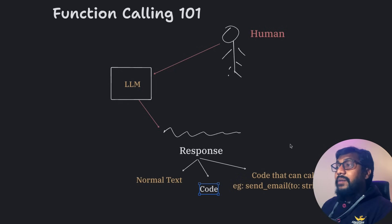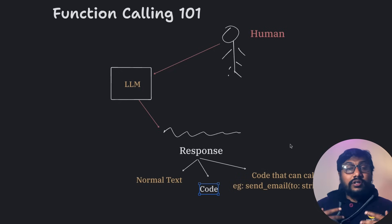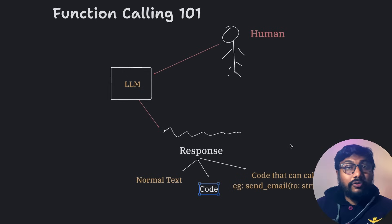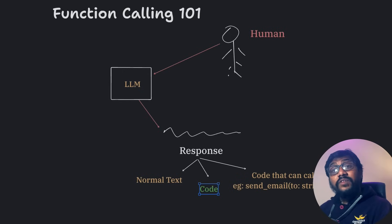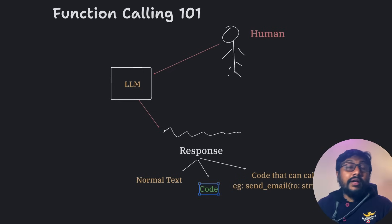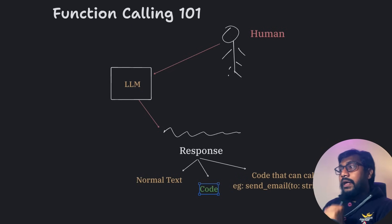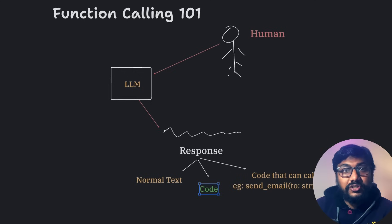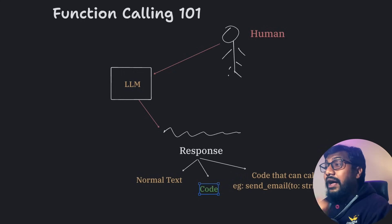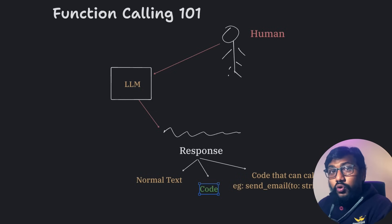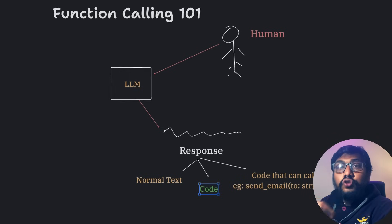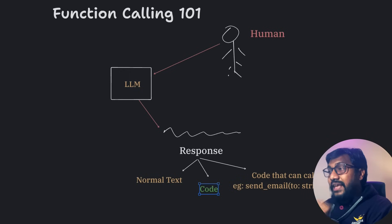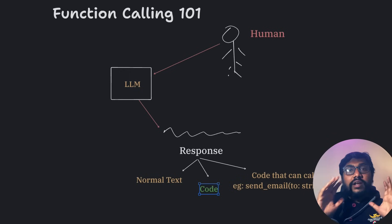The second type is maybe the human is asking 'Write me a Python code to import CSV in pandas' — now the AI is going to answer with computer code that you could copy-paste into your Python REPL and execute. The third type, which not a lot of people pay attention to, is something called a structured response — it could be a JSON — something that can be used to call a function.